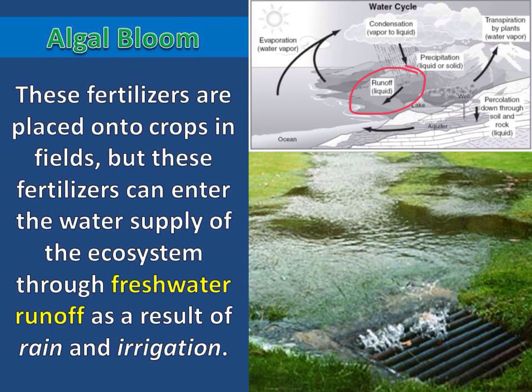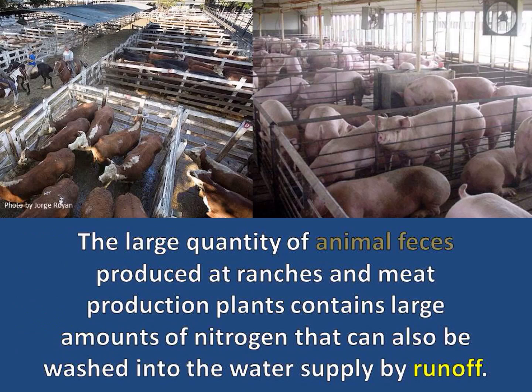Once these nutrients make it into the water supply, they can travel through rivers and streams to various ecosystems and even have negative effects on life in the ocean. The large quantity of animal feces produced at ranches and meat production plants contains large amounts of nitrogen that can also be washed into the water supply by runoff.